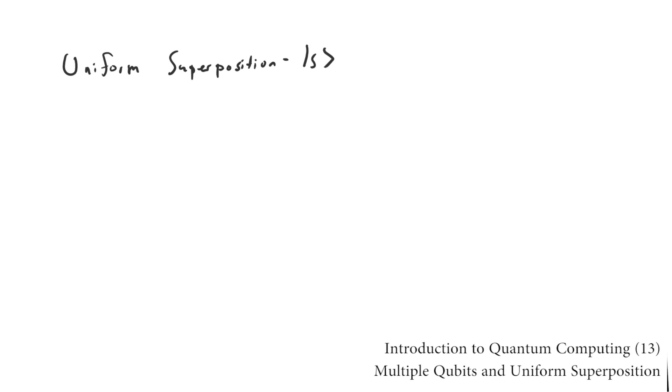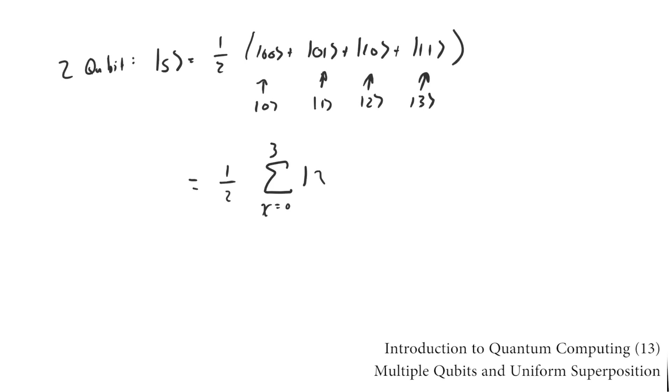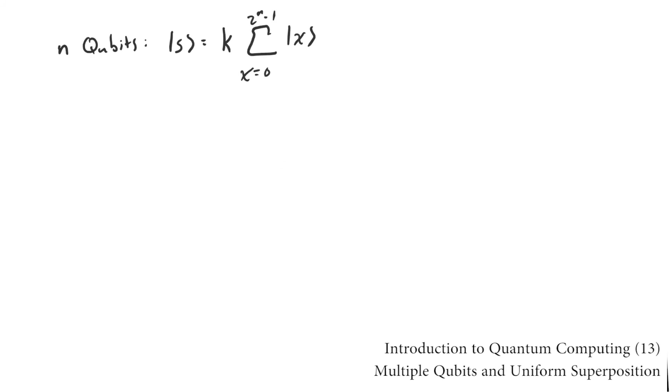The uniform superposition, denoted s, is a special state that has equal probability of collapsing to any of the classical states upon measurement.